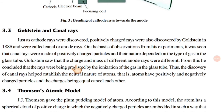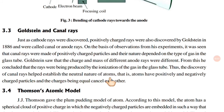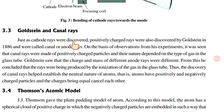Goldstein saw that the charge and mass of different anode rays were different. From this, he concluded that the rays were being produced by the ionization of the gases in the glass tube. Thus, the discovery of canal rays helped establish the neutral nature of atoms — that is, atoms have positively and negatively charged particles and the charges being equal cancel each other. The cathode ray was discovered, and at the same time, positively charged rays discovered by Goldstein, which are called canal rays or anode rays.